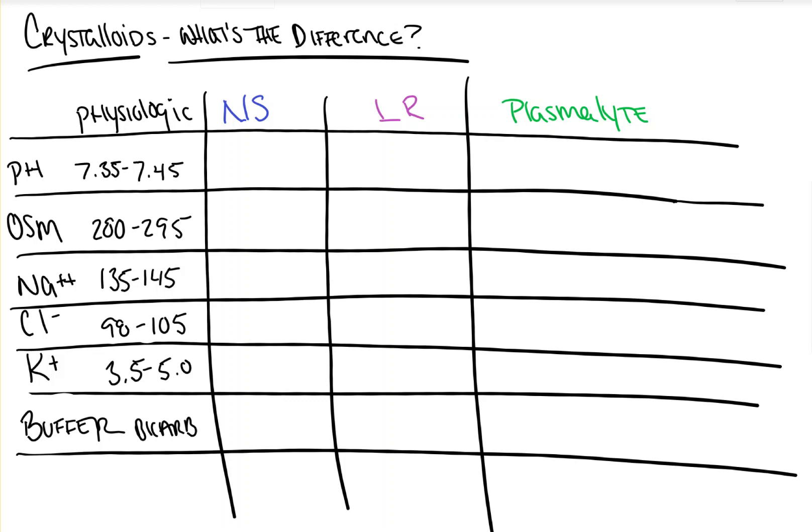Sodium, which is 135 to 145. Chloride, 98 to 105. Potassium, 3.5 to 5. And then we have our buffer, which is bicarb. And these are the basic parameters that we're going to look at, and you can see them at the bottom.